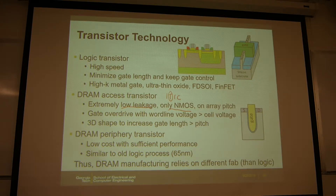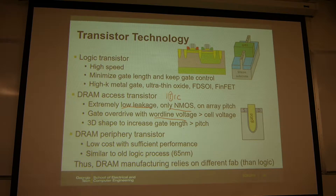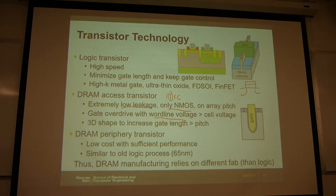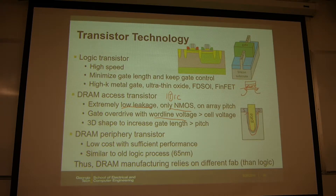Also, there is gate overdrive with the wordline voltage VPP. Some of you have noticed that the VPP for the wordline voltage is higher than VDD — so you overdrive the gate of this access transistor. This is a typical recess gate transistor for the DRAM. Compared to the planar transistor, you can see the difference: in a planar transistor the channel is at the surface, but here you make the gate recess into the substrate, and the channel goes deeper. This is called the recess gate.